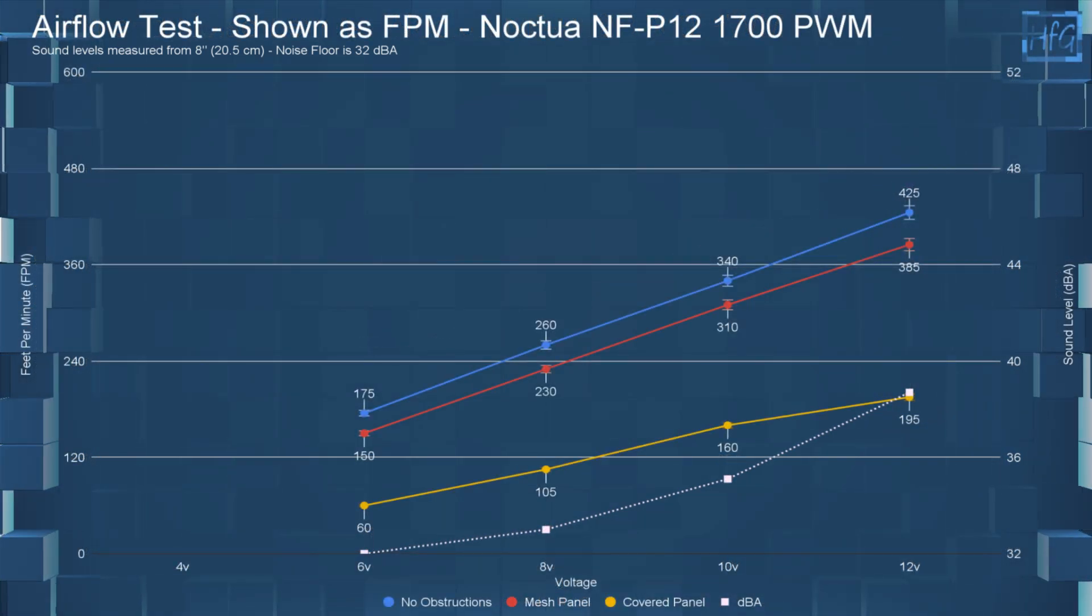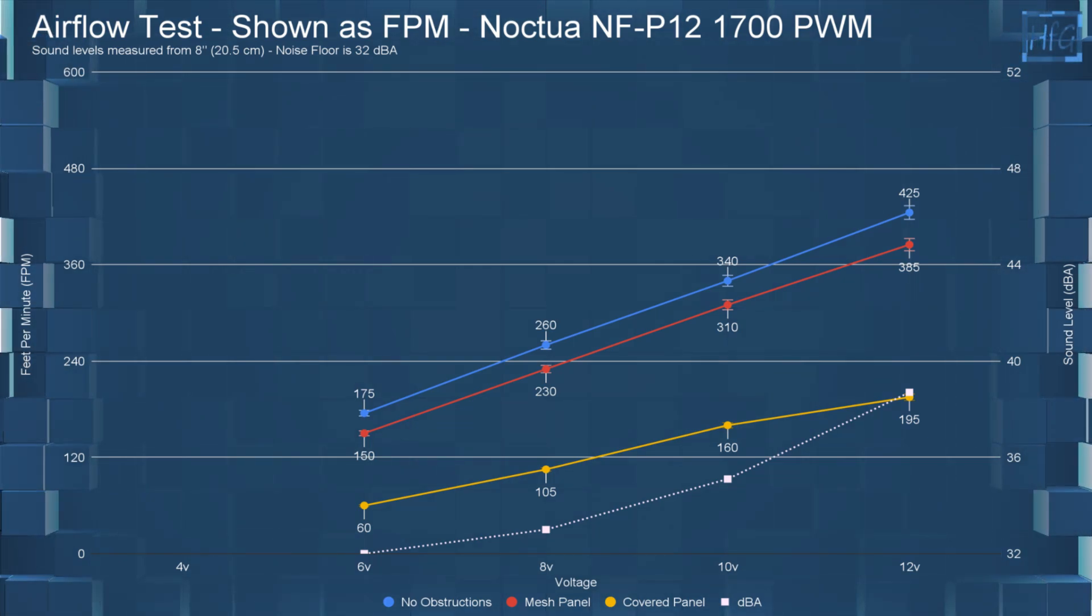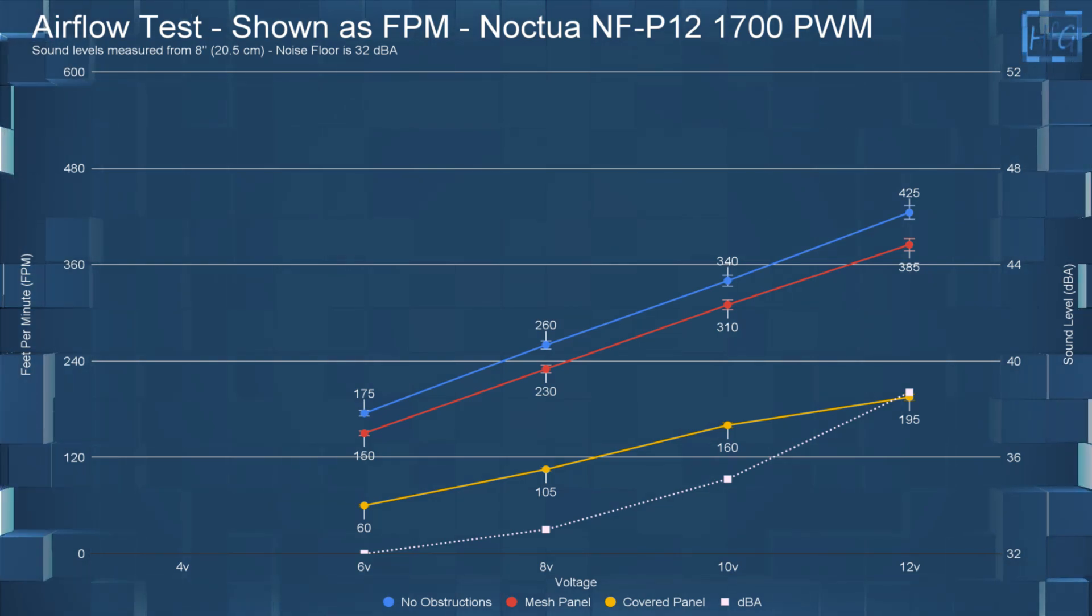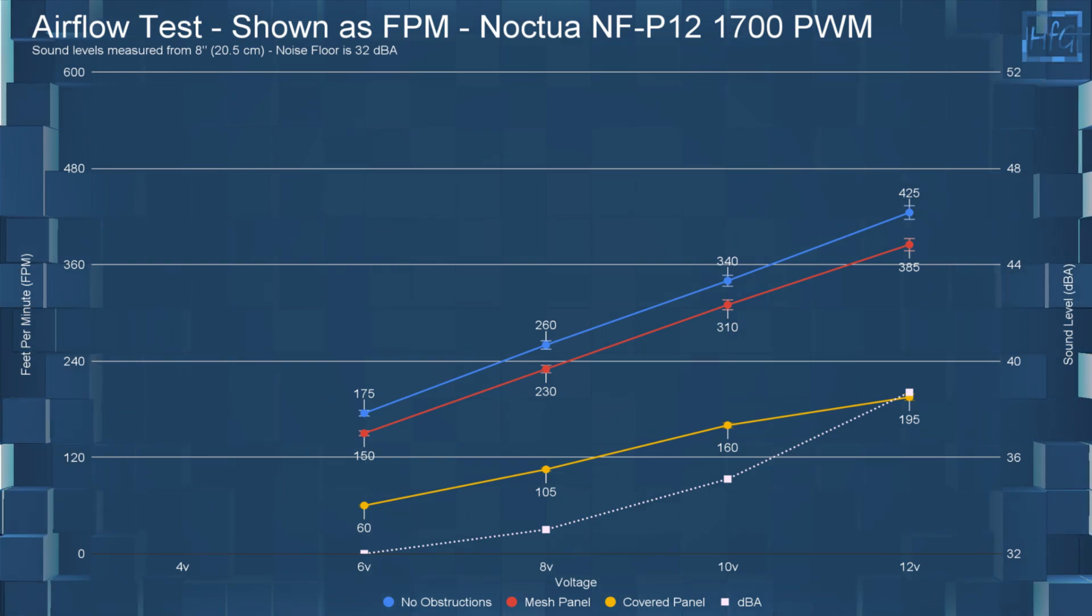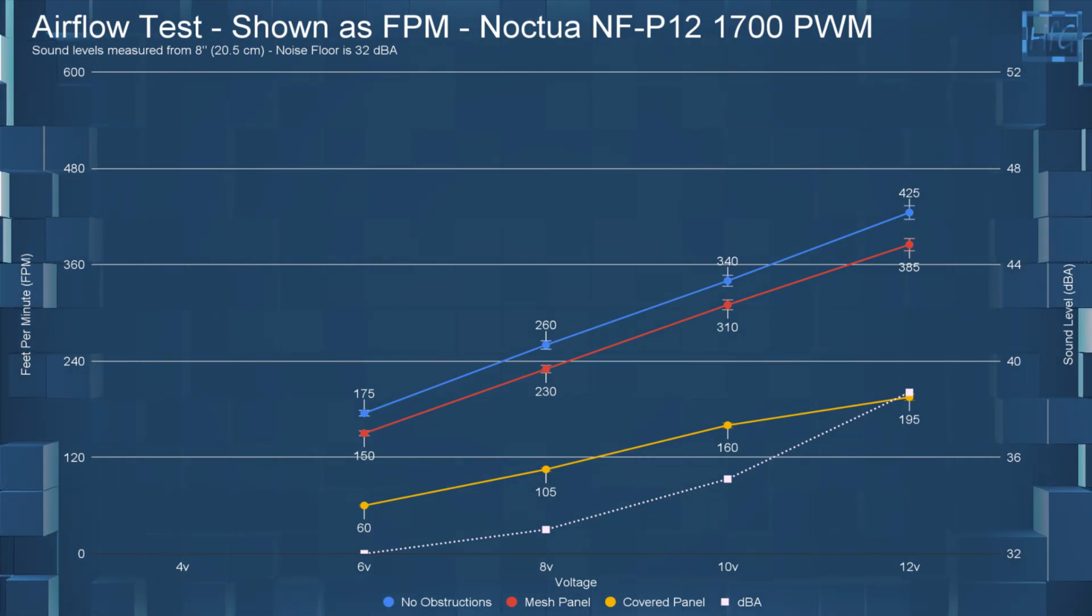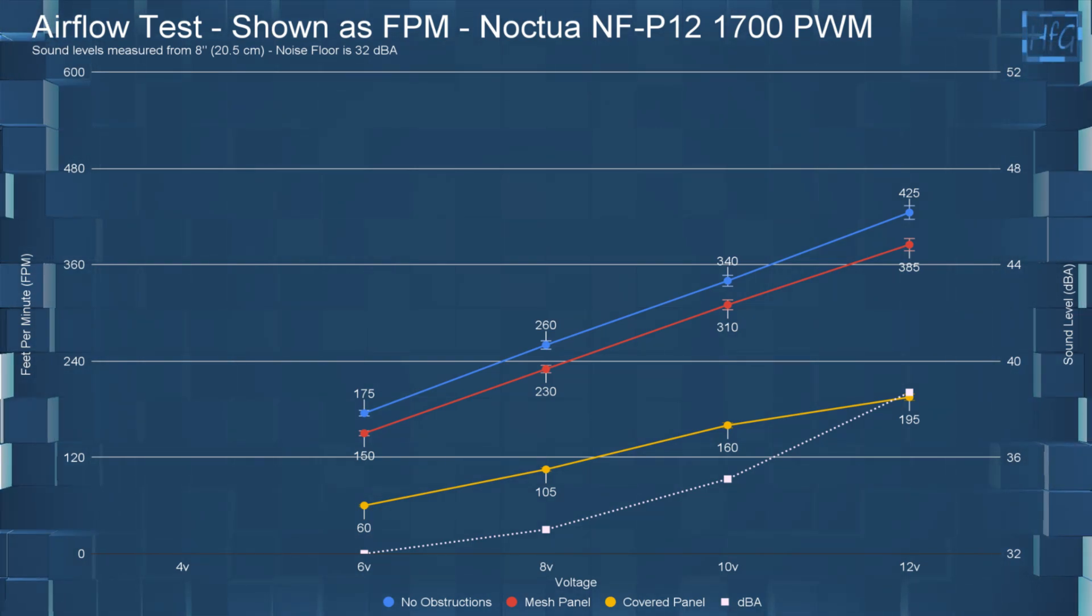On to the airflow testing. I left the DBA numbers up on the chart for your reference. At 6 volts, with no obstructions, the FPM was 175. With the mesh panel, it had an FPM of 150. And with the covered panel, it had an FPM of 60.